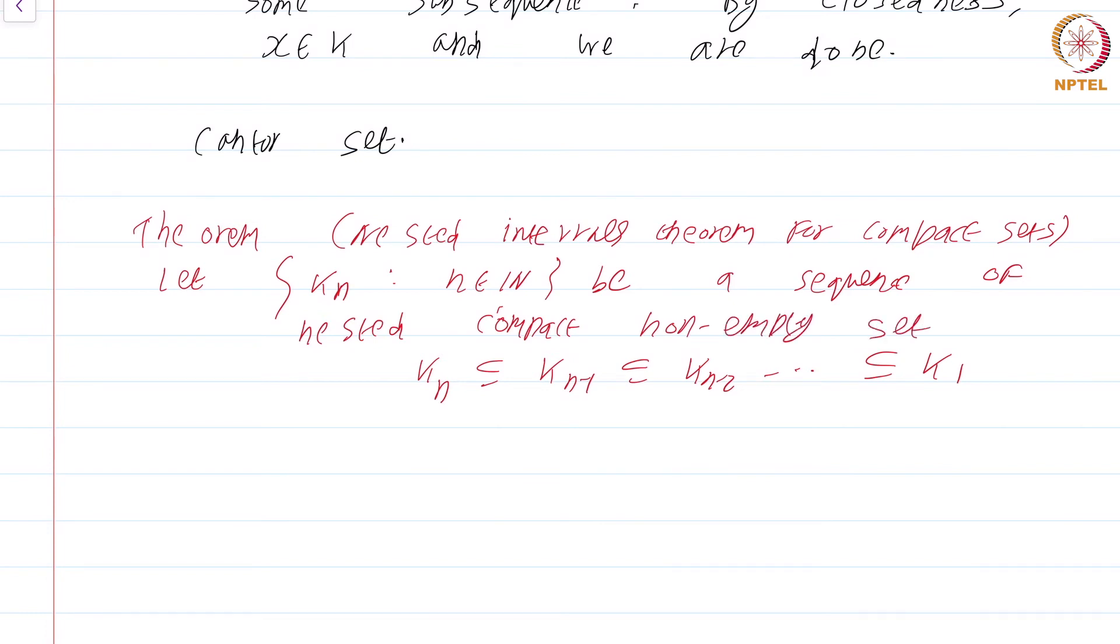Then intersection k_n is not the empty set. In fact, intersection k_n would be... I will talk about that later. Let me just finish off with this: intersection k_n is non-empty. Proof.